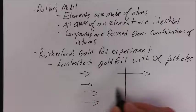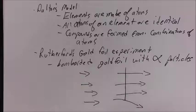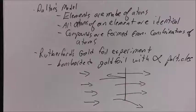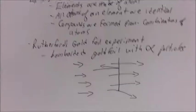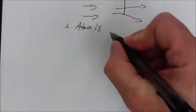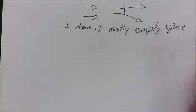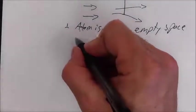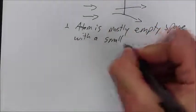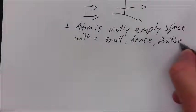Most went straight through. Some were deflected and a few were deflected almost straight back. So what did this tell us? Two important things to remember. One, the atom is mostly empty space. The next thing is that it has a small, dense, positively charged nucleus.